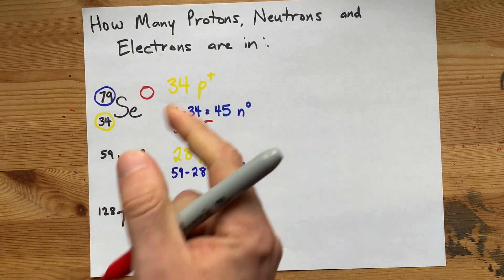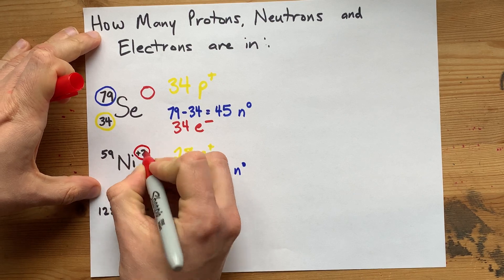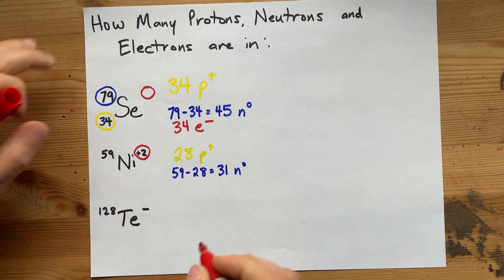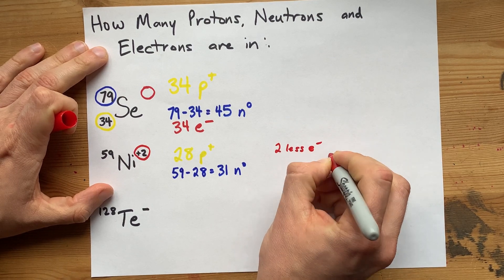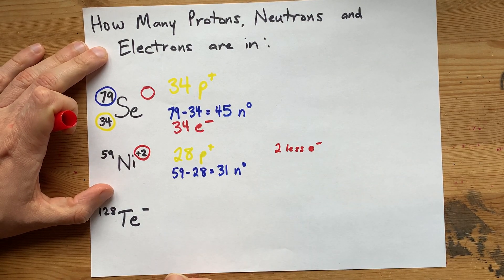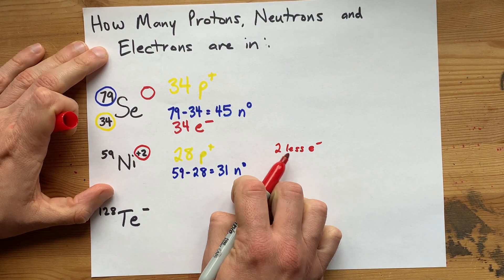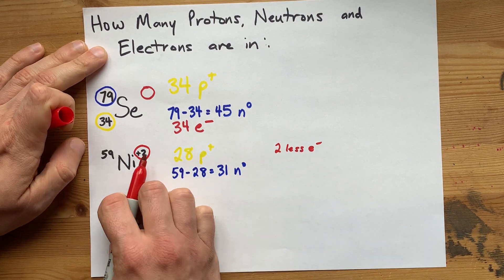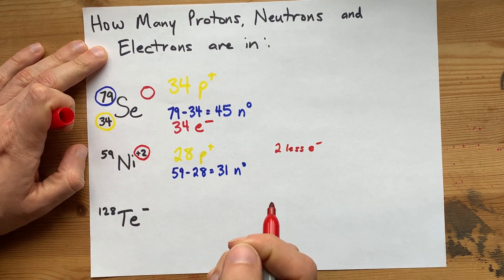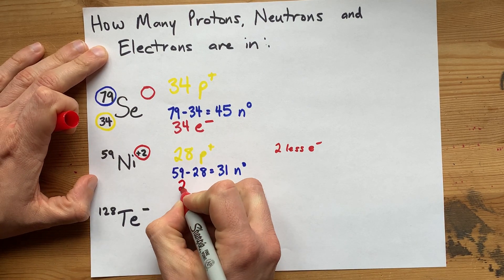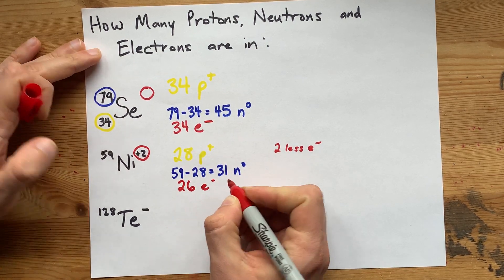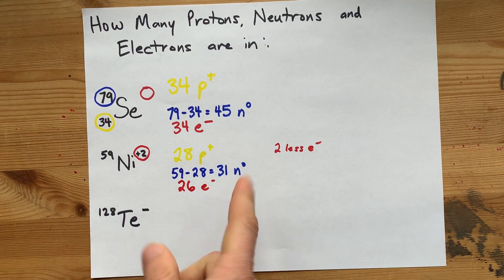Now, this particle does have a charge. It's plus 2. That means it has 2 less electrons than protons. Losing minuses is what gives you a plus charge. So, compared to the 28 protons, we only have 26 electrons here.